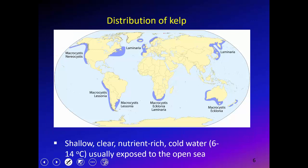Kelp is found only in cold water, but more important than temperature is that the water must be both clear and nutrient-rich — a combination we don't often see. For example, waters near the Delaware Estuary are nutrient-rich but certainly not clear. Kelp also has to be in shallow water because it's rooted and needs sunlight, and it's usually found in open ocean rather than bays or estuaries.